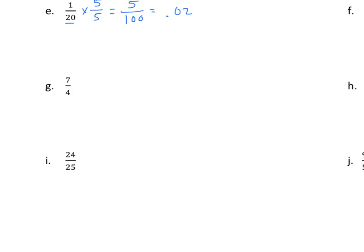Okay, 7 fourths. Can I multiply 4 by a whole number to get 10? The answer is no. But if I think quarters — I know there are 4 quarters in a dollar — so I know that 4 times 25 gives me 100. So the fraction equivalent to 1 is 25 twenty-fifths. 7 times 25 is 175 and 4 times 25 is 100. I know 7 quarters is $1.75. Again, we could name this as a mixed number, and as a decimal it's 1.75, or 1 and 75 hundredths.